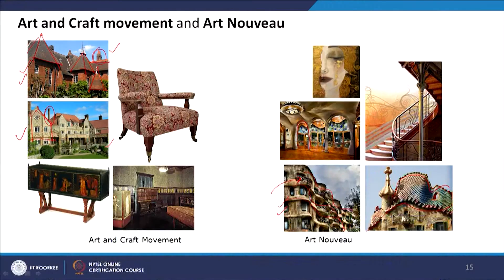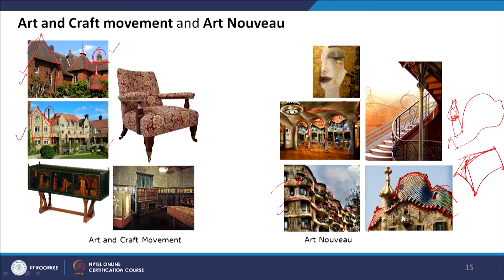Looking at Antonio Gaudi's interior design, it is very fluid and very different from previous notions of architecture. The pitched roof was molded and blended with the whiplash pattern, transforming the pitched roof with chimney into something entirely different. In Arts and Crafts, the pitched roof and chimney were retained as they were. Comparing William Morris's interior with Antonio Gaudi's interior design, there is a drastic difference between the two.